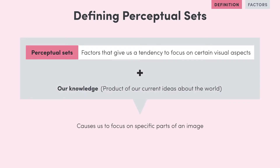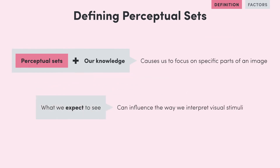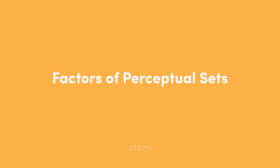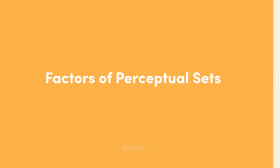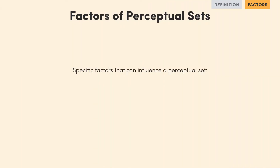Leading on from this, what we expect to see can greatly influence the way that we interpret visual stimuli. Now that we understand how our ideas can help affect what we see, let's go ahead and look at some specific factors that can influence a perceptual set.